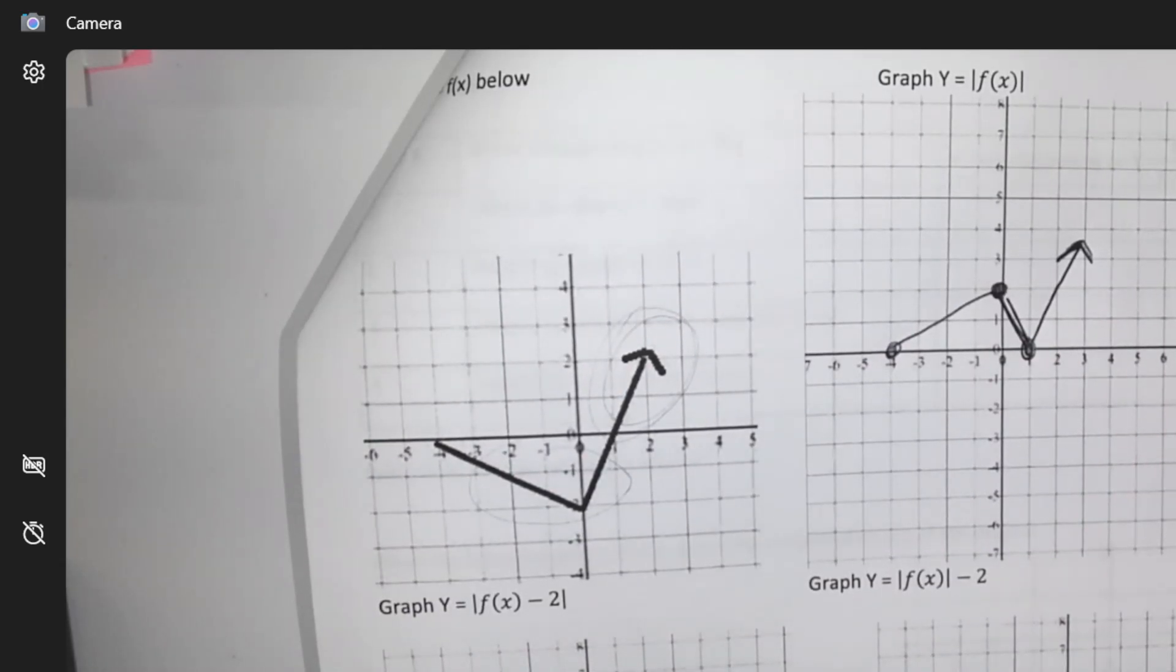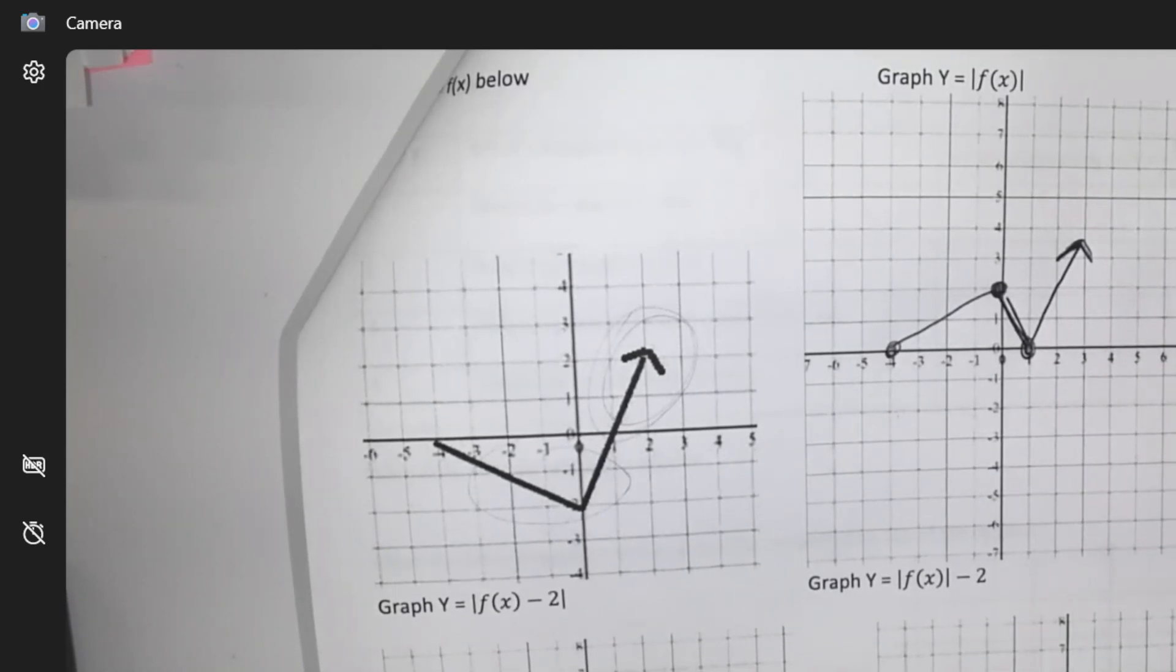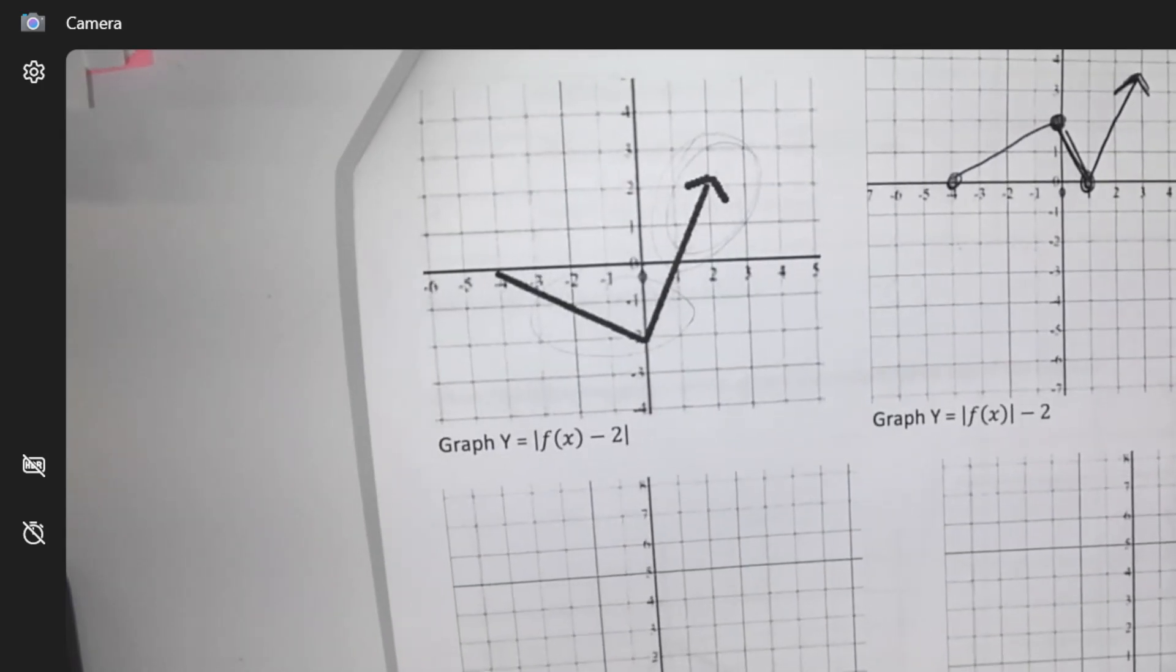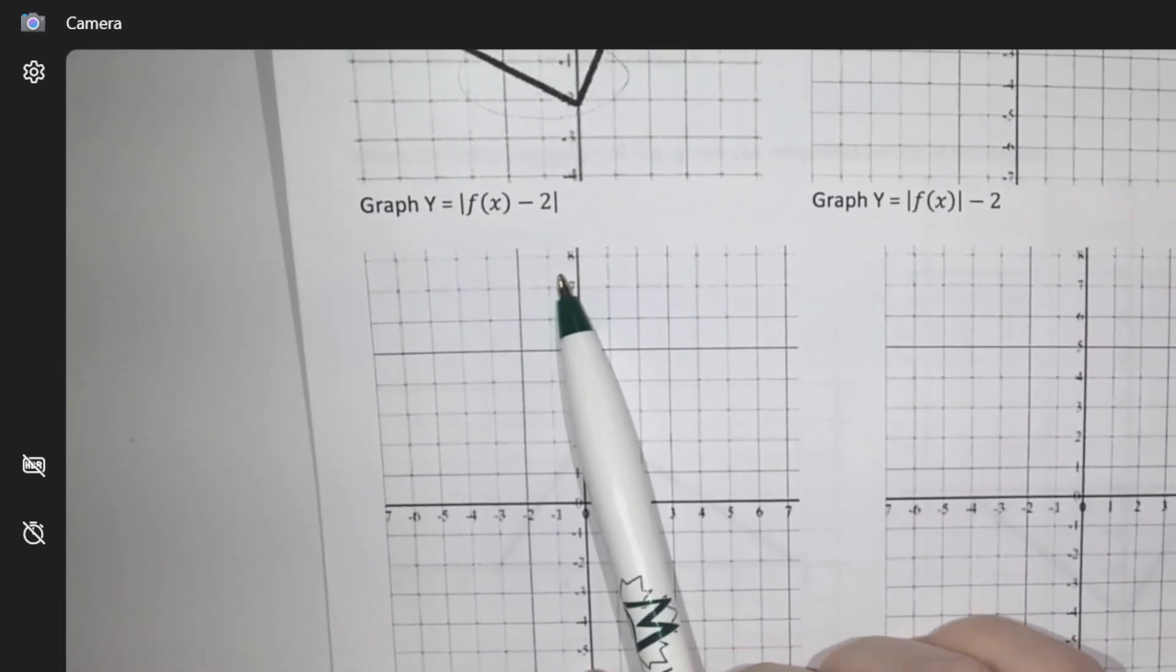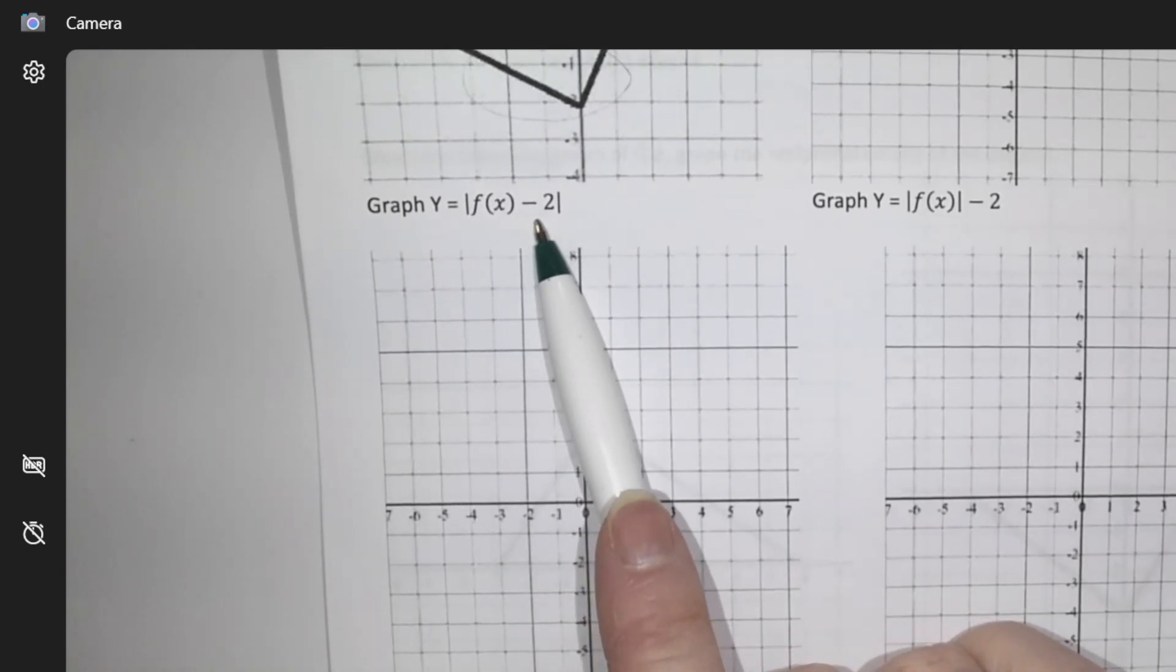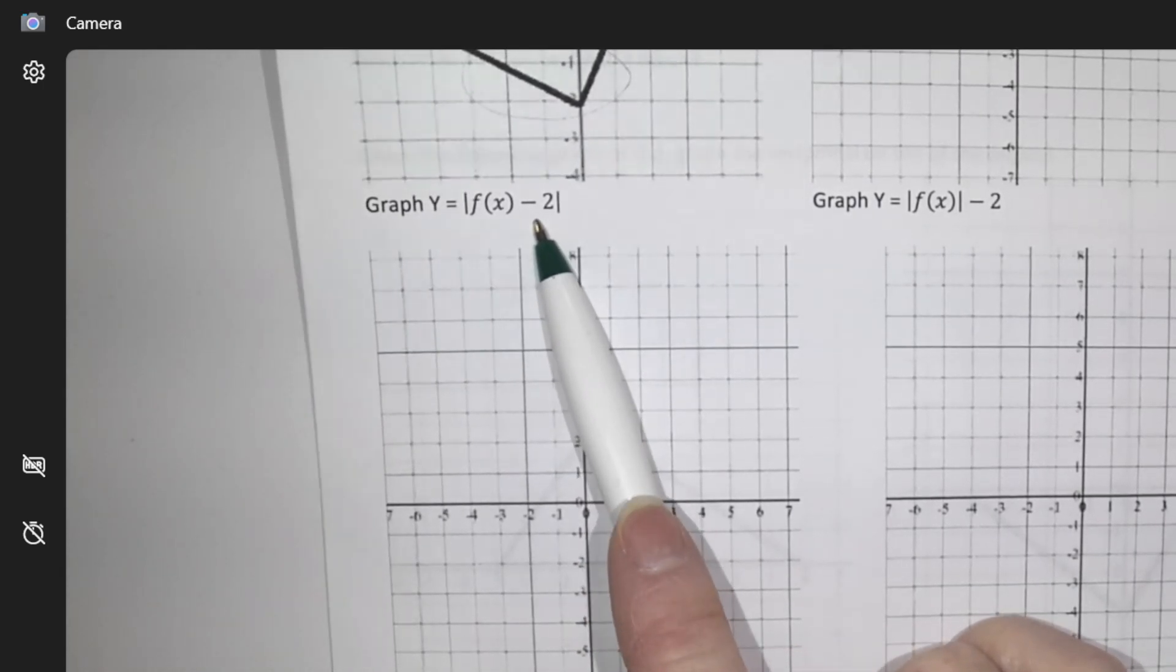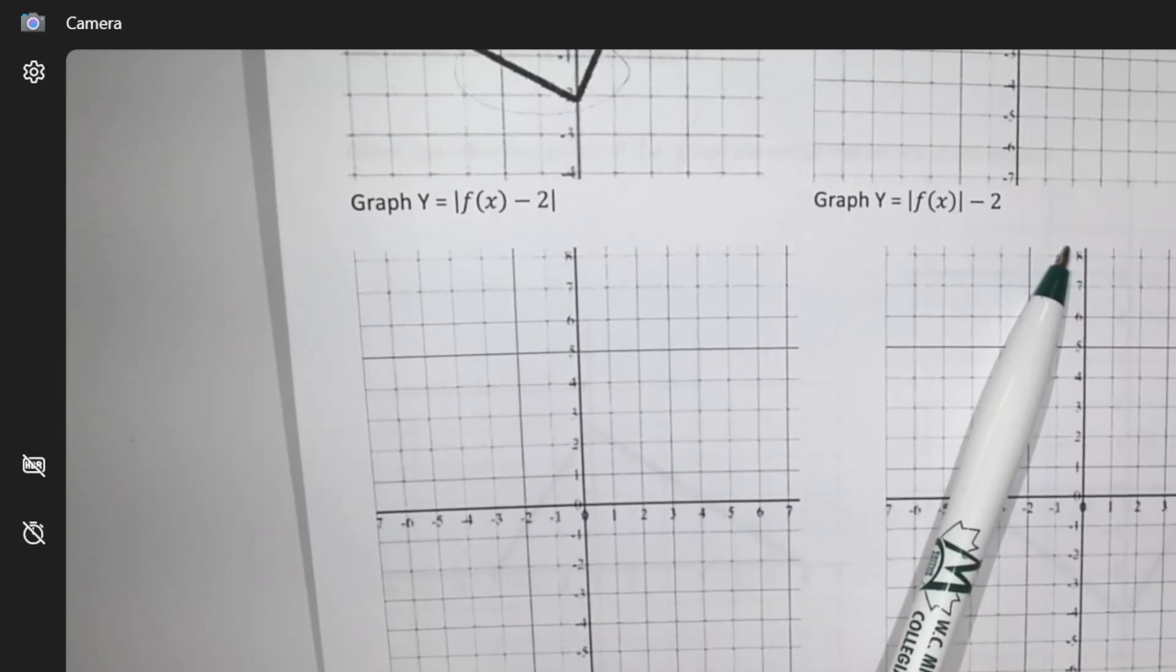So when you have that absolute value, do you notice how my final graph never is below? It's never going to be below. So if you were ever to ask questions with range, you can think about that. I want you to look at these. There's another transformation, so there's an absolute value going on, but there's also a minus 2 going on.